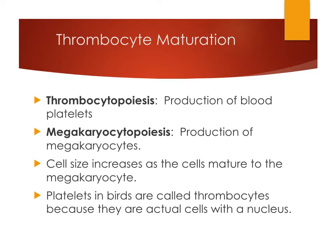Moving on to platelets: thrombopoiesis is the production of blood platelets, and megakaryocytopoiesis is the production of megakaryocytes, which are the precursors to platelets. Unlike granulocytes and erythrocytes, cell size increases as the cells mature to the megakaryocyte — the largest cell in the pathway — which then divides into platelets. In birds, platelets are called thrombocytes because they are actual nucleated cells, as all avian blood cells are nucleated.